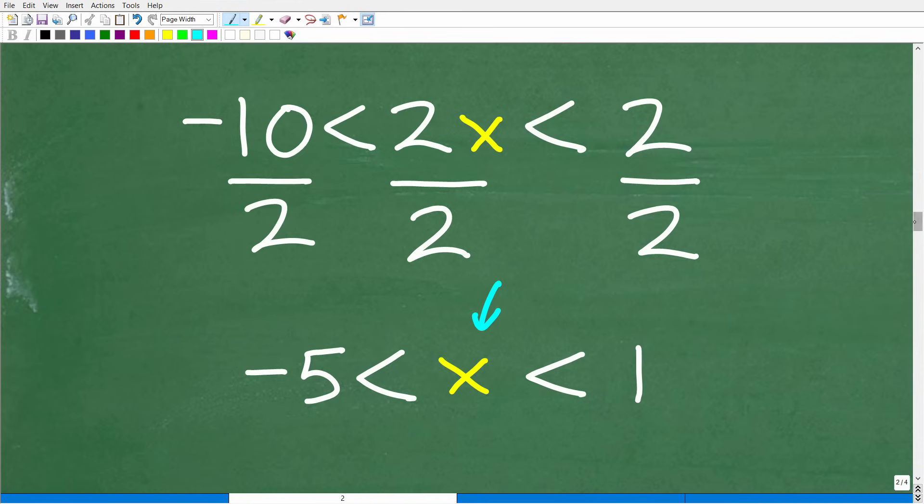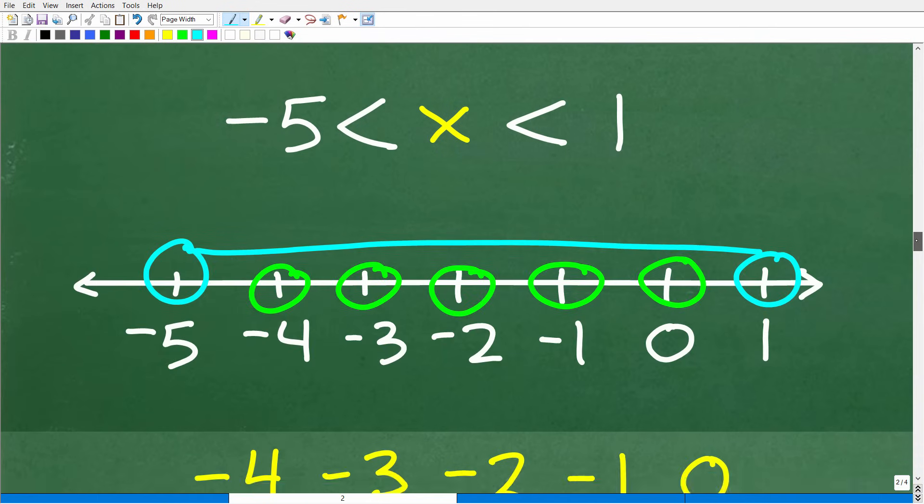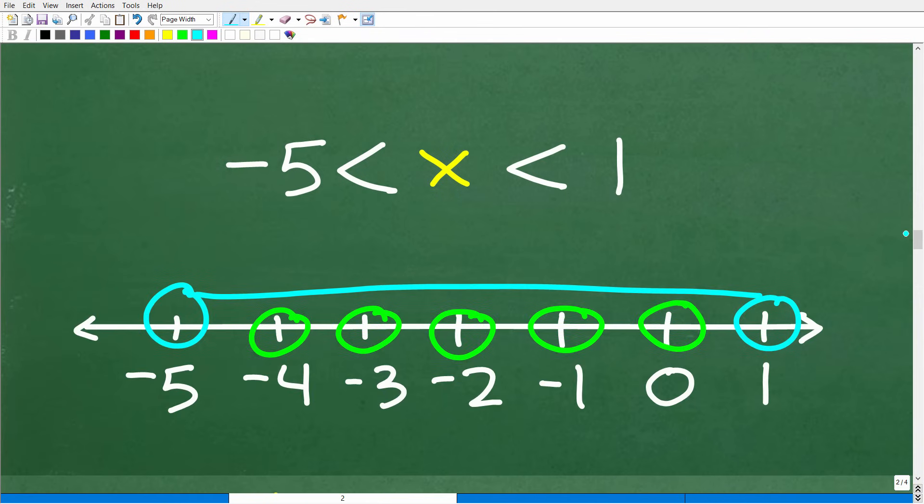You've got to be careful here because not all the numbers that are greater than negative 5 or less than 1 are solutions. It's only integers, and we could see this better on a graph. Here is this expressed as a graph when x is an integer.